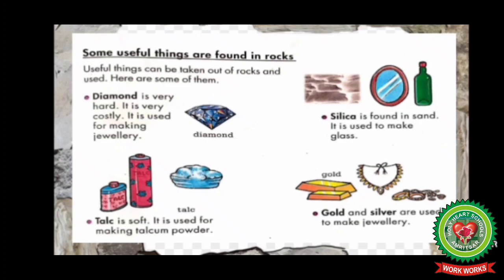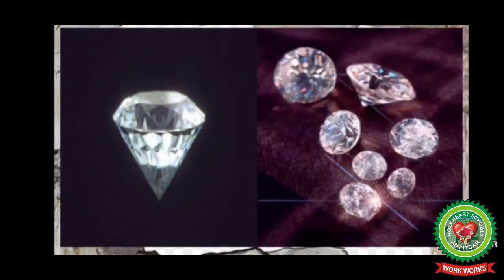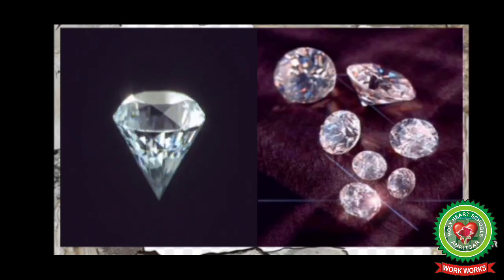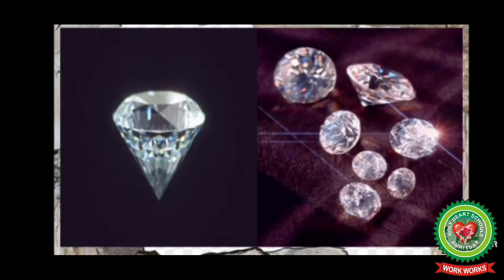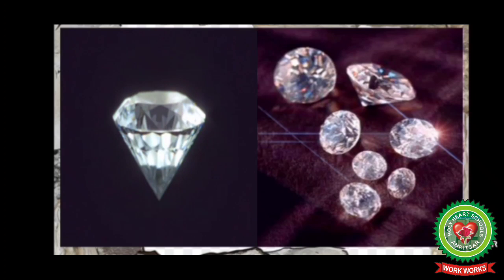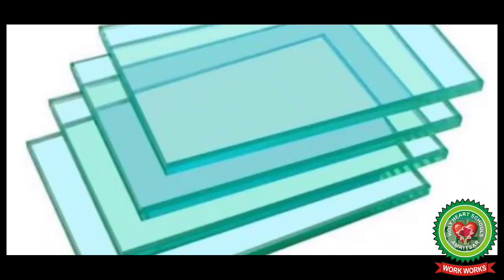Number one is diamond. Diamond is very hard and it is very costly. It is used for making jewelry. Look at the picture of diamond in your book — it shines and is a very beautiful mineral. It is found in coal mines. Diamond is polished to use in jewelry, and because it is very hard it is also used to cut glass.